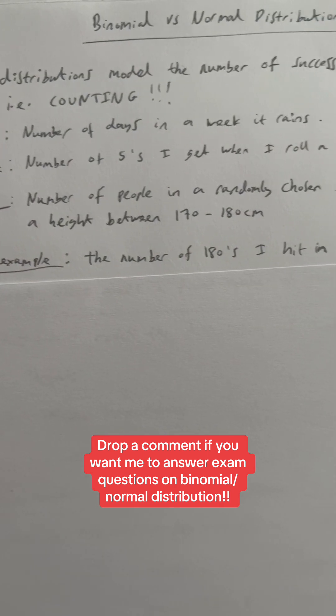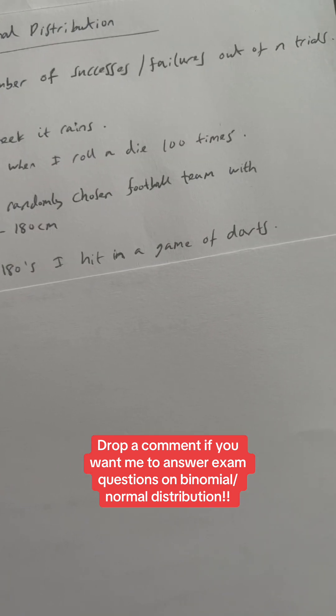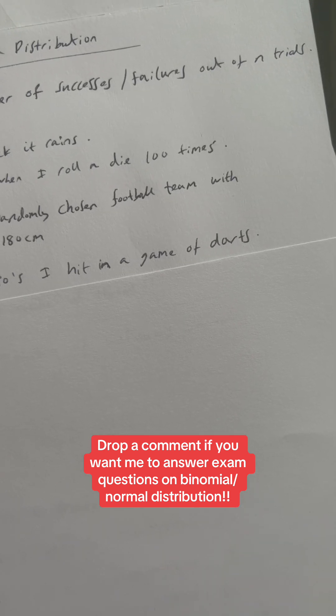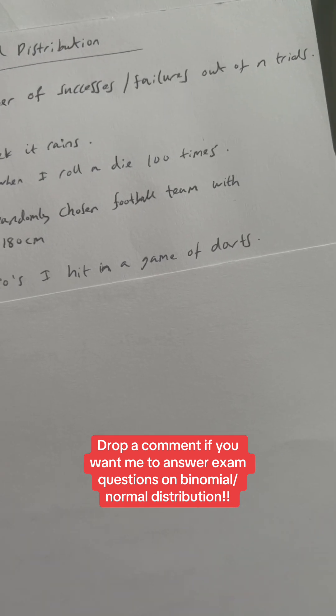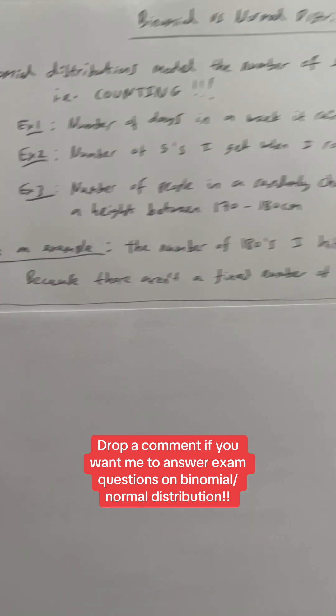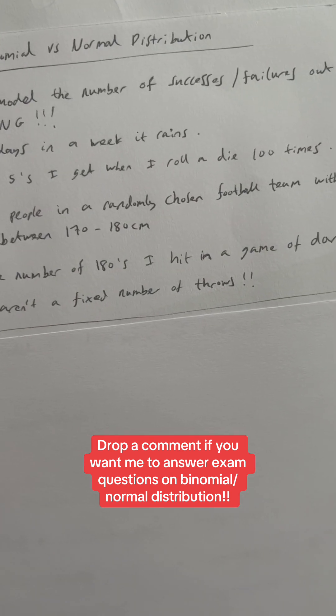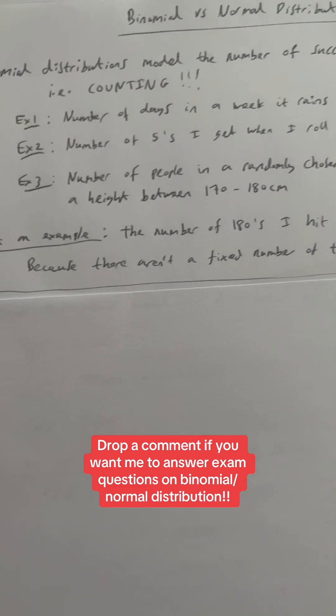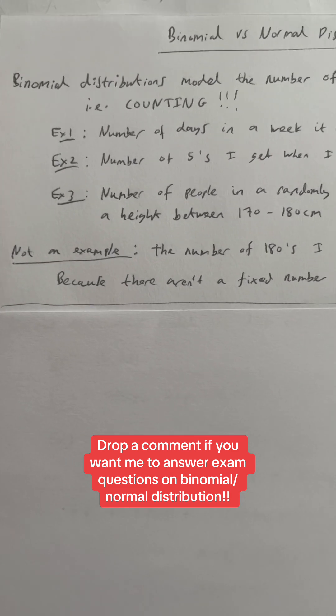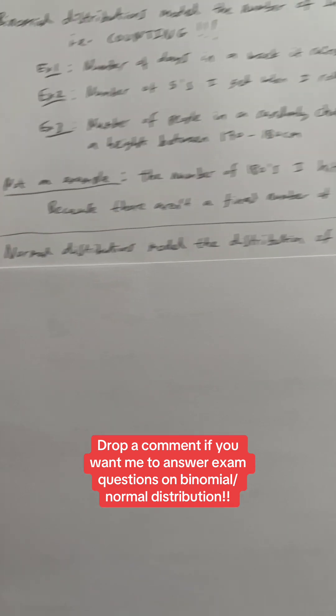Now, this is not an example. The number of 180s you hit in the game of darts. Now, you may be thinking, surely the number of 180s you hit is binomial, counting the successes. But no, it's not because you don't have the fixed number of throws. When you play a game of darts, you could be playing darts for the rest of your life. In theory, you could be playing forever. So therefore, it's not binomial, no fixed trials.